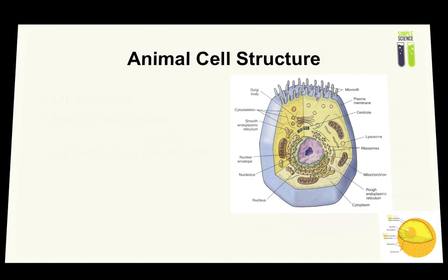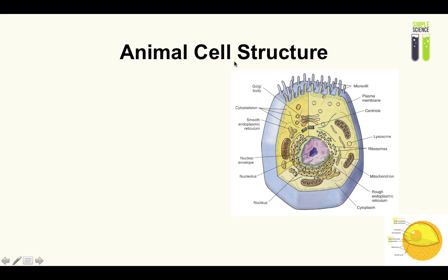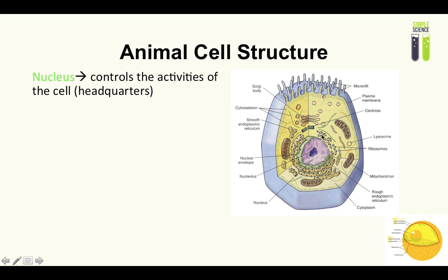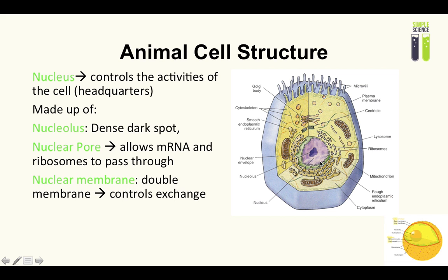Let's take a look at the largest organelle in the animal cell structure, which is the nucleus. The nucleus is the headquarters of the cell. First, the nucleolus — it's the darkest, densest spot you see on the diagram. Why is it the darkest, densest spot? It's because it contains chromatin. Chromatin is simply loosely coiled chromosomes. So just keep in mind that the nucleolus is the darkest spot within the nucleus itself.